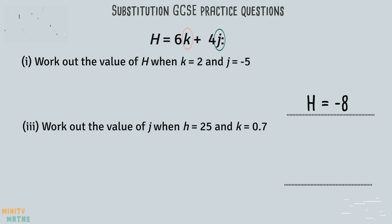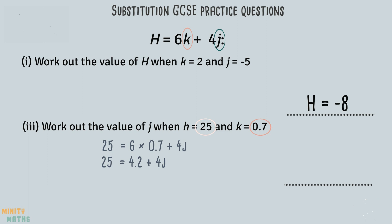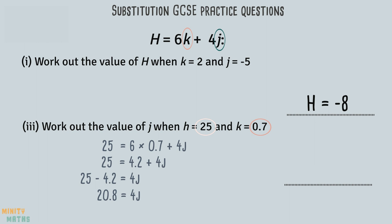The second part of the question requires us to find the value of j. We are given values for k as well as h. Firstly, rewrite the equation with the value substituted, then perform the multiplication to simplify the equation. We now need to rearrange the equation in order to get the unknown variable j on its own. We take 4.2 away from both sides of the equation — this tells us that 20.8 is equal to 4 lots of j. To find what 1j is equal to, we divide 20.8 by 4, giving us an answer of 5.2.